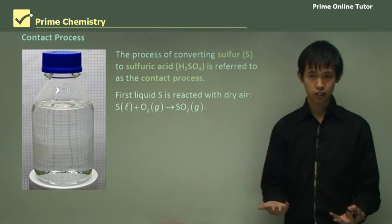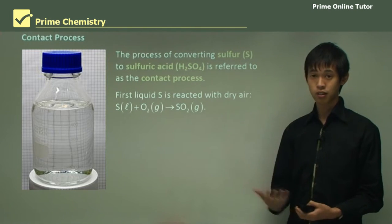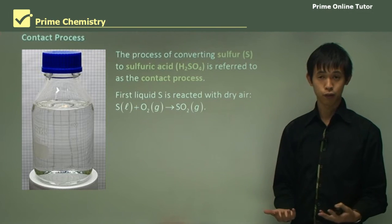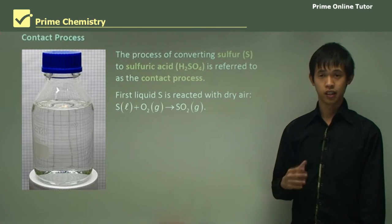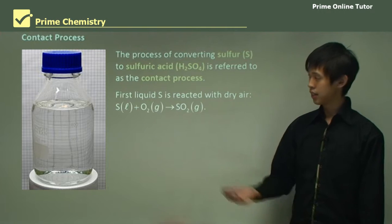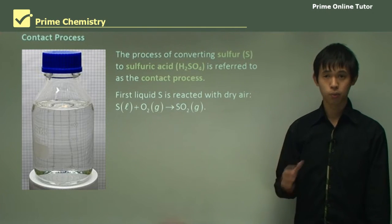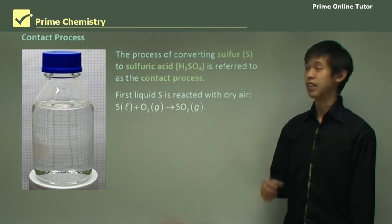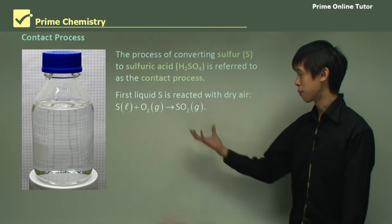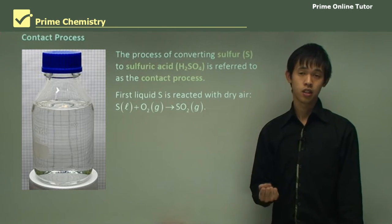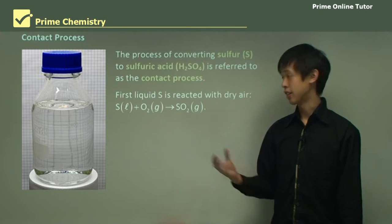As students you should be familiar with SO2 from your previous chemistry studies. It's one of the causes of acid rain. In many cases we don't want this to be produced, but in the case of sulfuric acid we actually want to produce this because we want sulfuric acid to come from it.